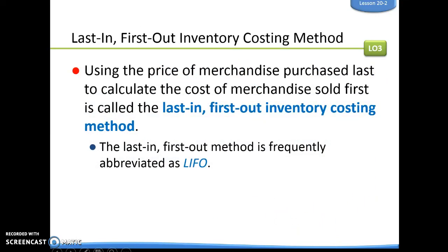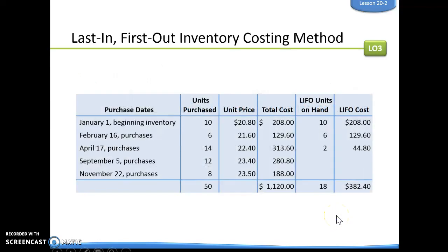Now really, the opposite of that would be our LIFO — last in, first out. That means the last things that we bought are going to be the first things that we sell, using the price of merchandise purchased last to calculate the cost of merchandise sold. So we're going to just flip it around. We have 18 units, but now we're going to sell the last things that we bought, keeping our newest things.